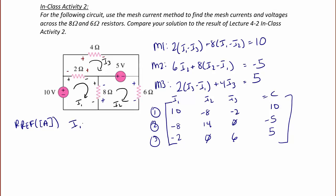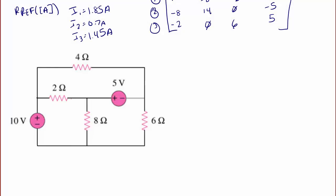So then we use reduced row echelon form of that matrix. And we get that I1 is 1.5 amps, I2 is 0.7 amps, and I3 is 1.45 amps. So we will label these three currents on our circuit: here we're going to have 1.85 amps, here we're going to have 0.7 amps, and here we're going to have 1.45 amps.